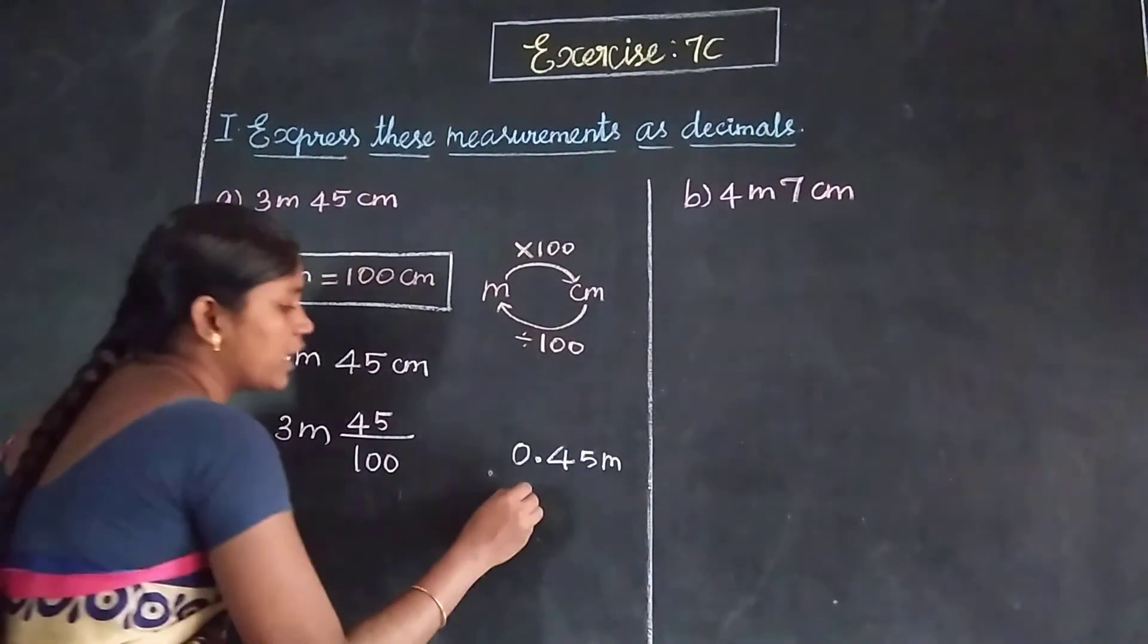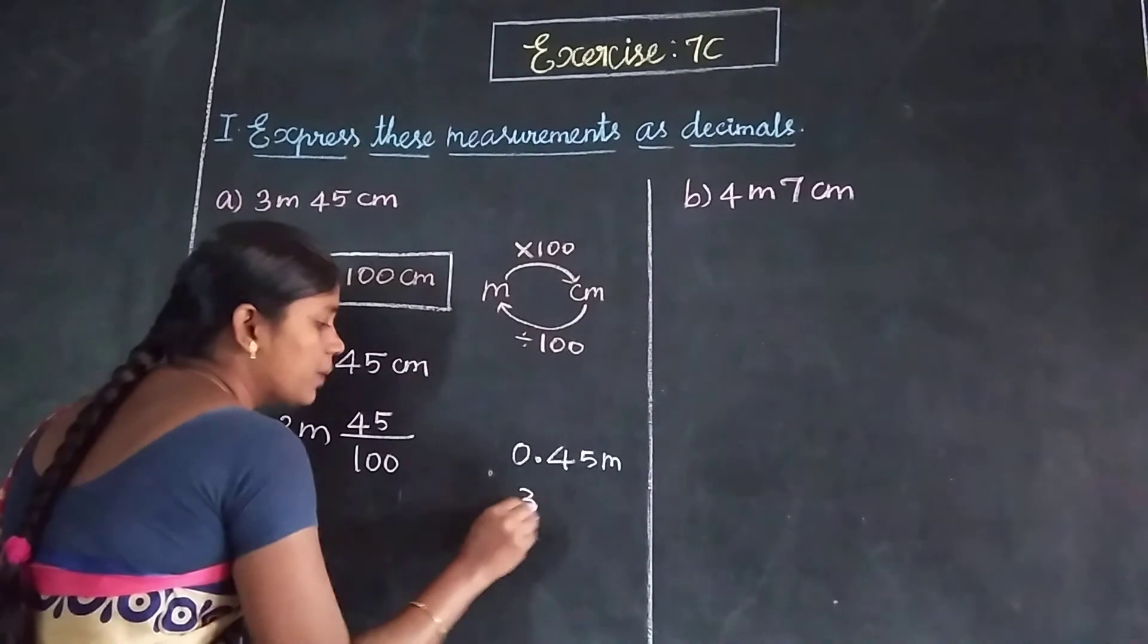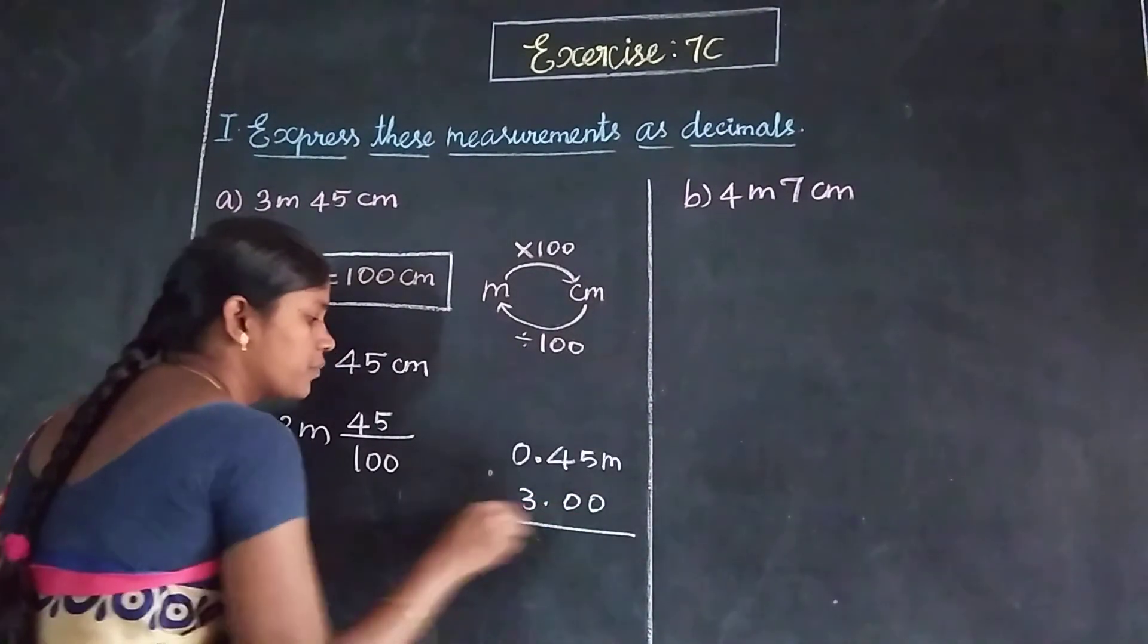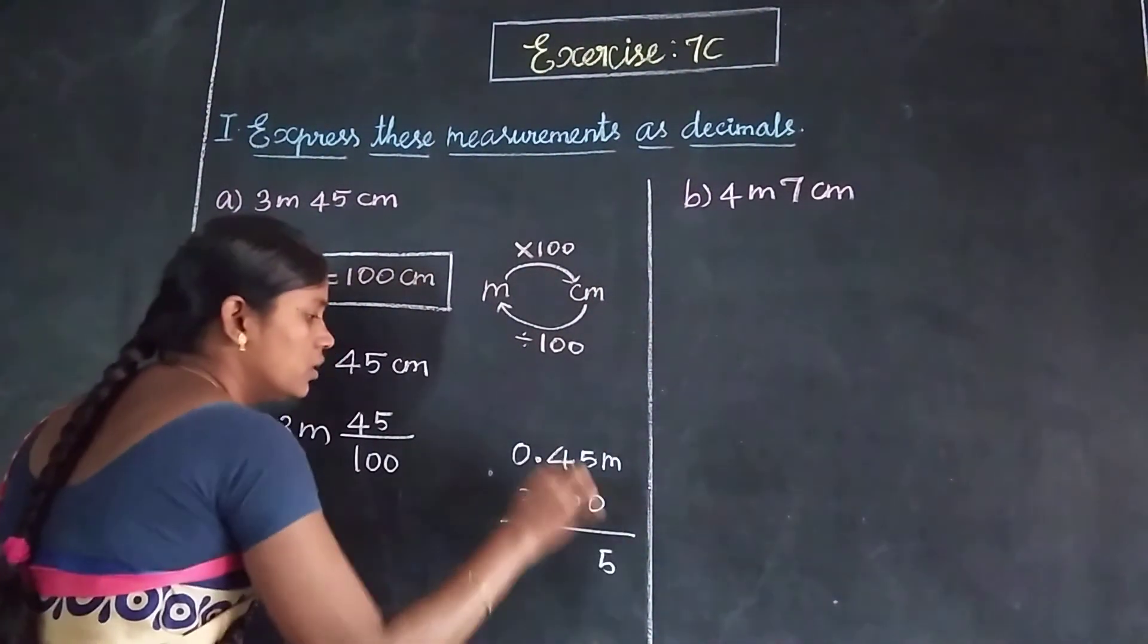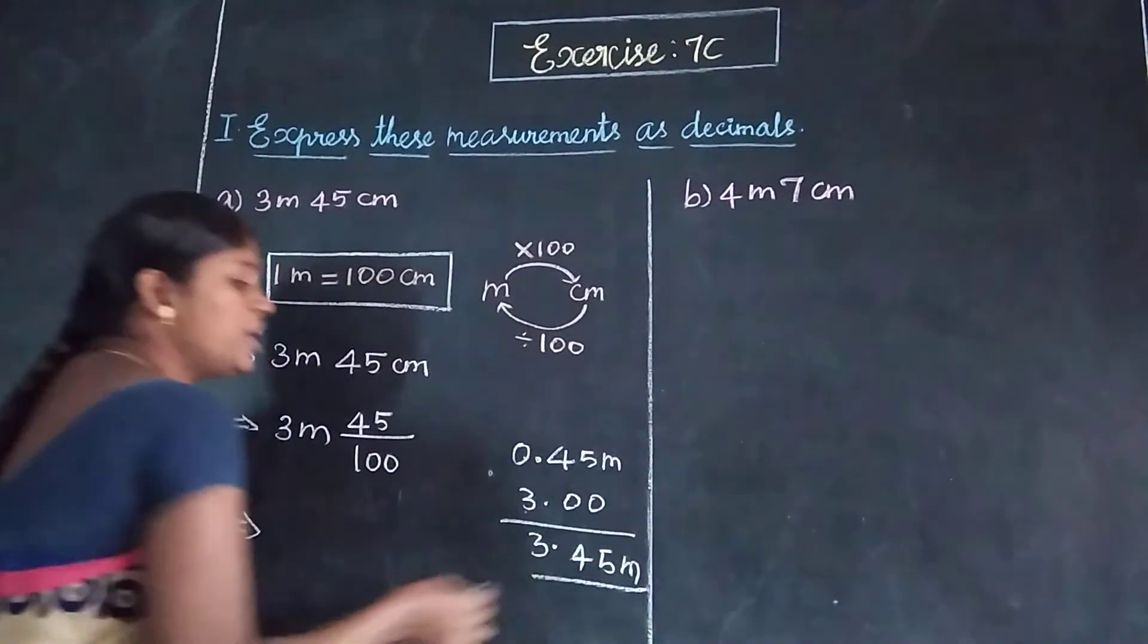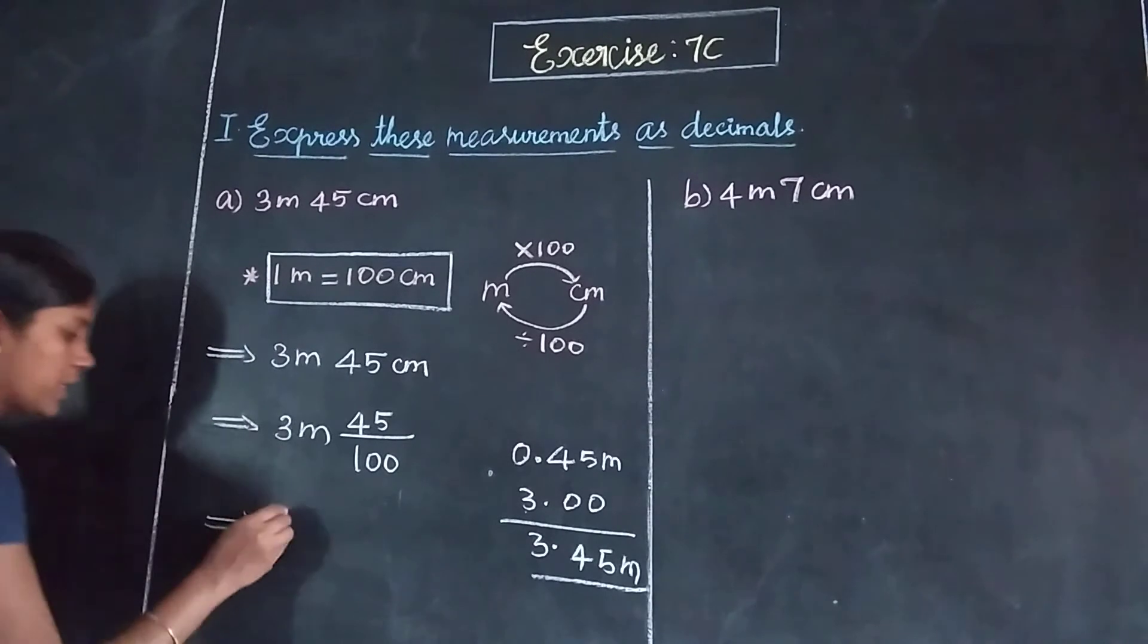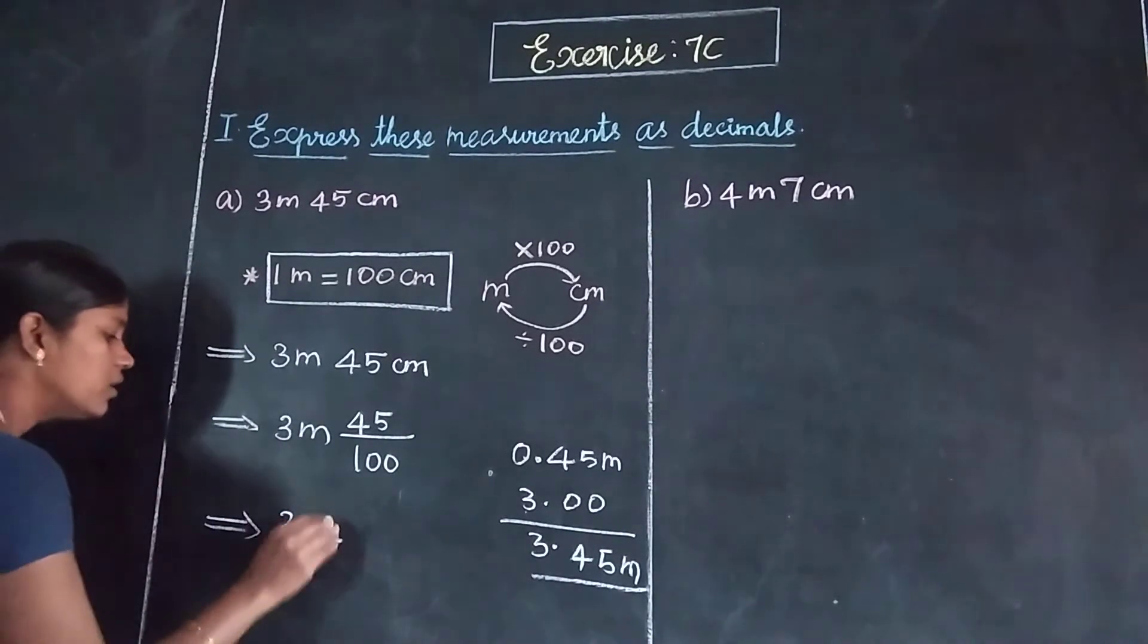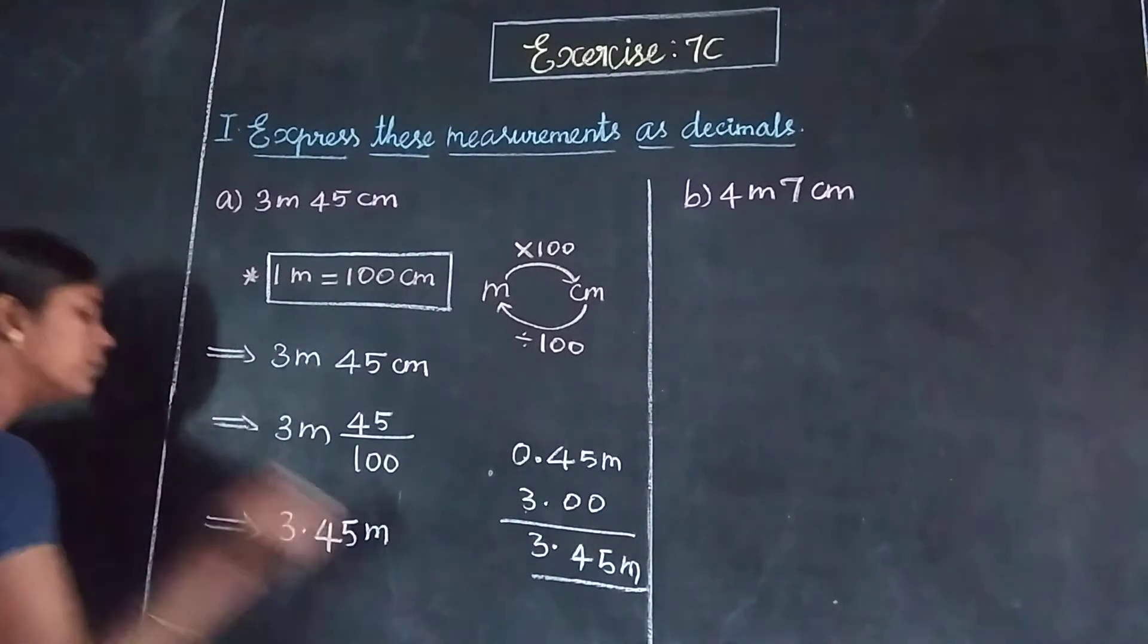3 meters plus 0.45 meters. We add 3 plus the decimal. 0, 0. 5, 4 plus 0 is 4. 0 plus 3 is 3. So 3.45 meters.